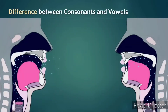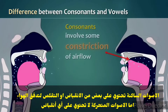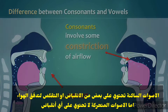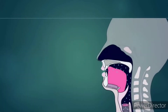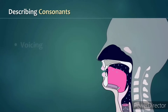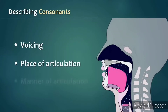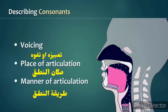What's the difference between consonants and vowels? Basically, consonants involve some constriction of airflow, whereas vowels do not. When linguists describe consonant sounds, we use three criteria: voicing, place of articulation, and manner of articulation.